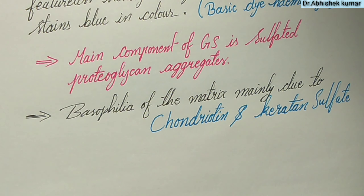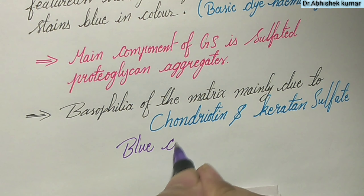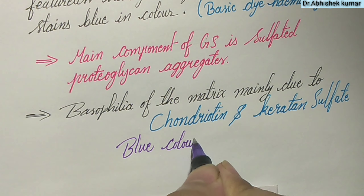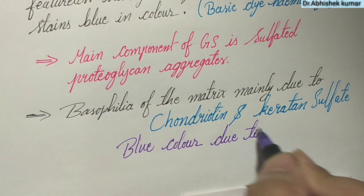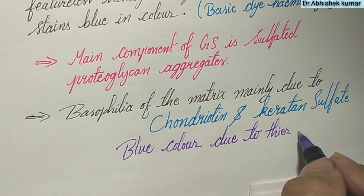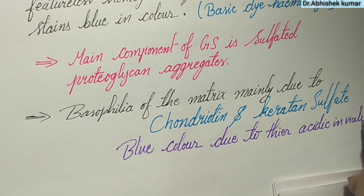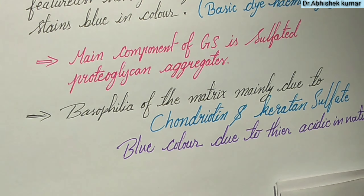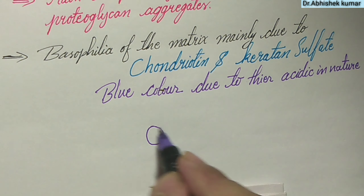The basophilia of the matrix is mainly due to chondroitin and keratin sulfate. The blue color of hyaline cartilage is due to its acidic nature.